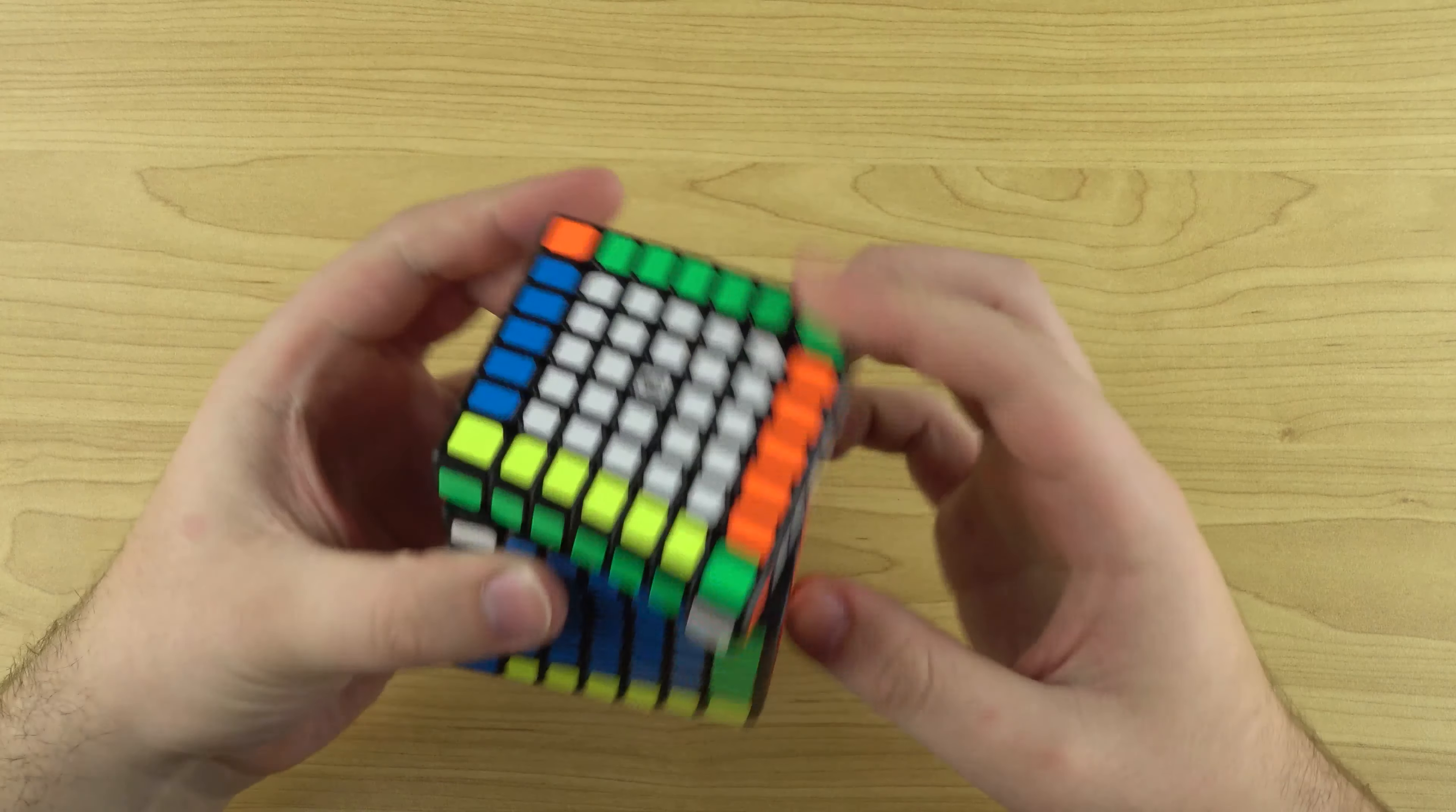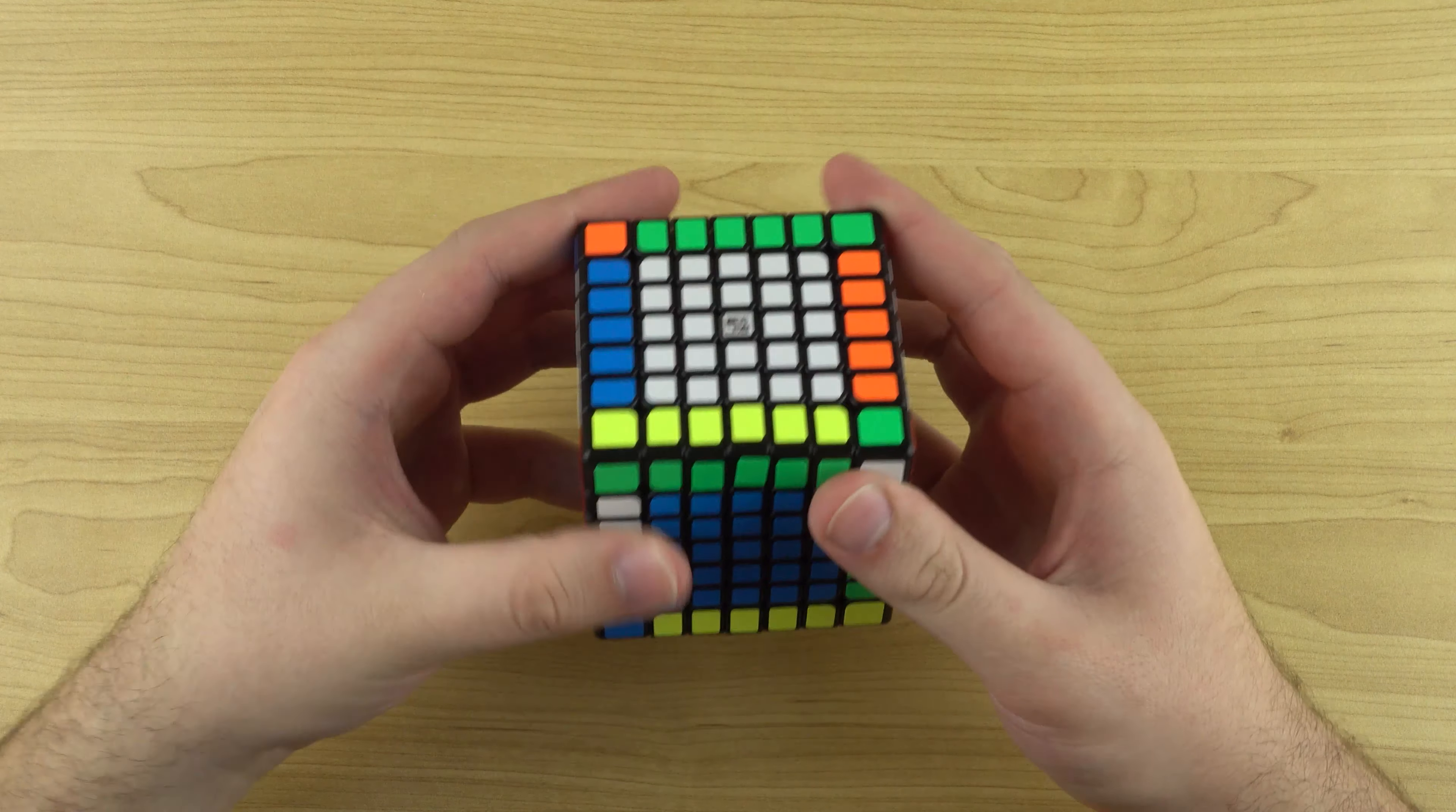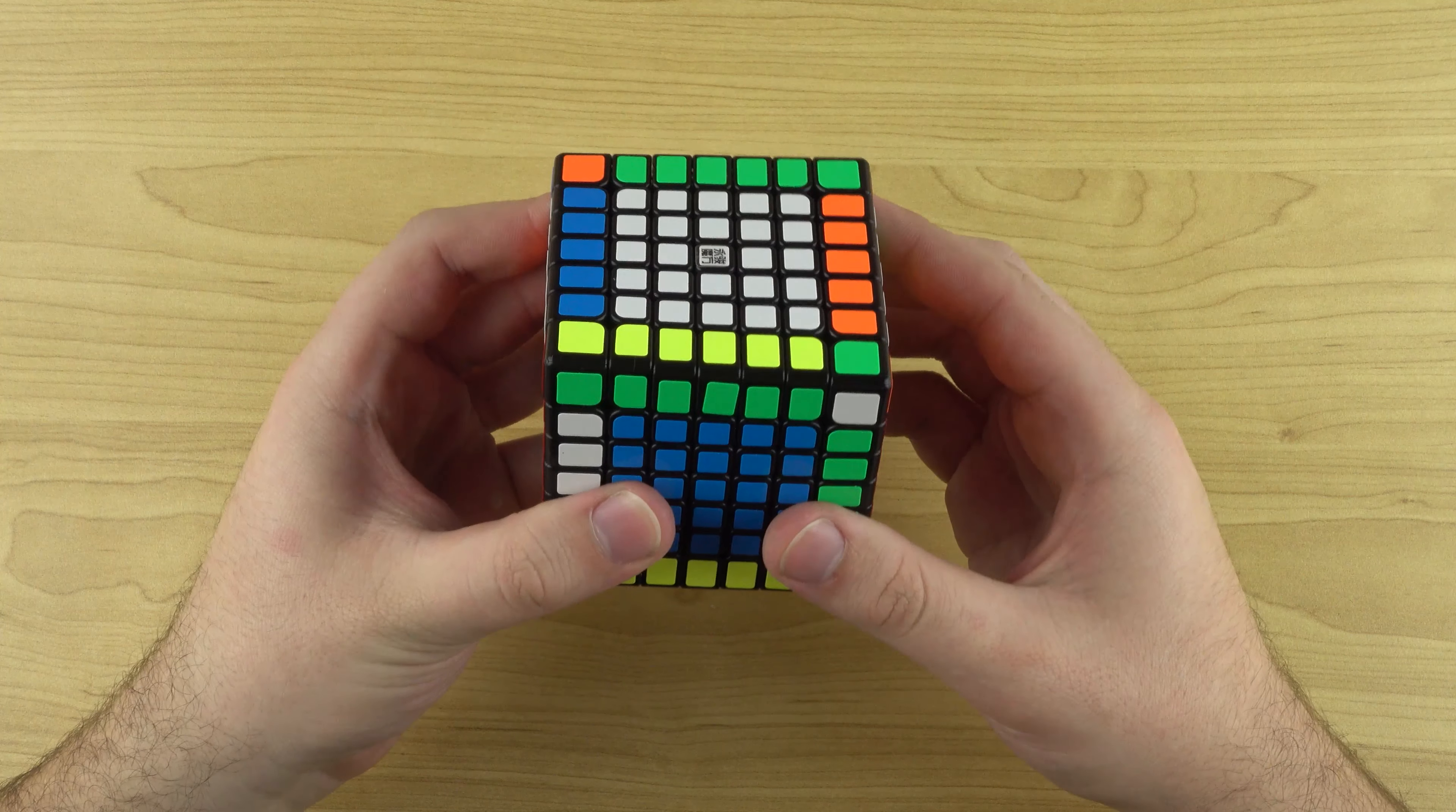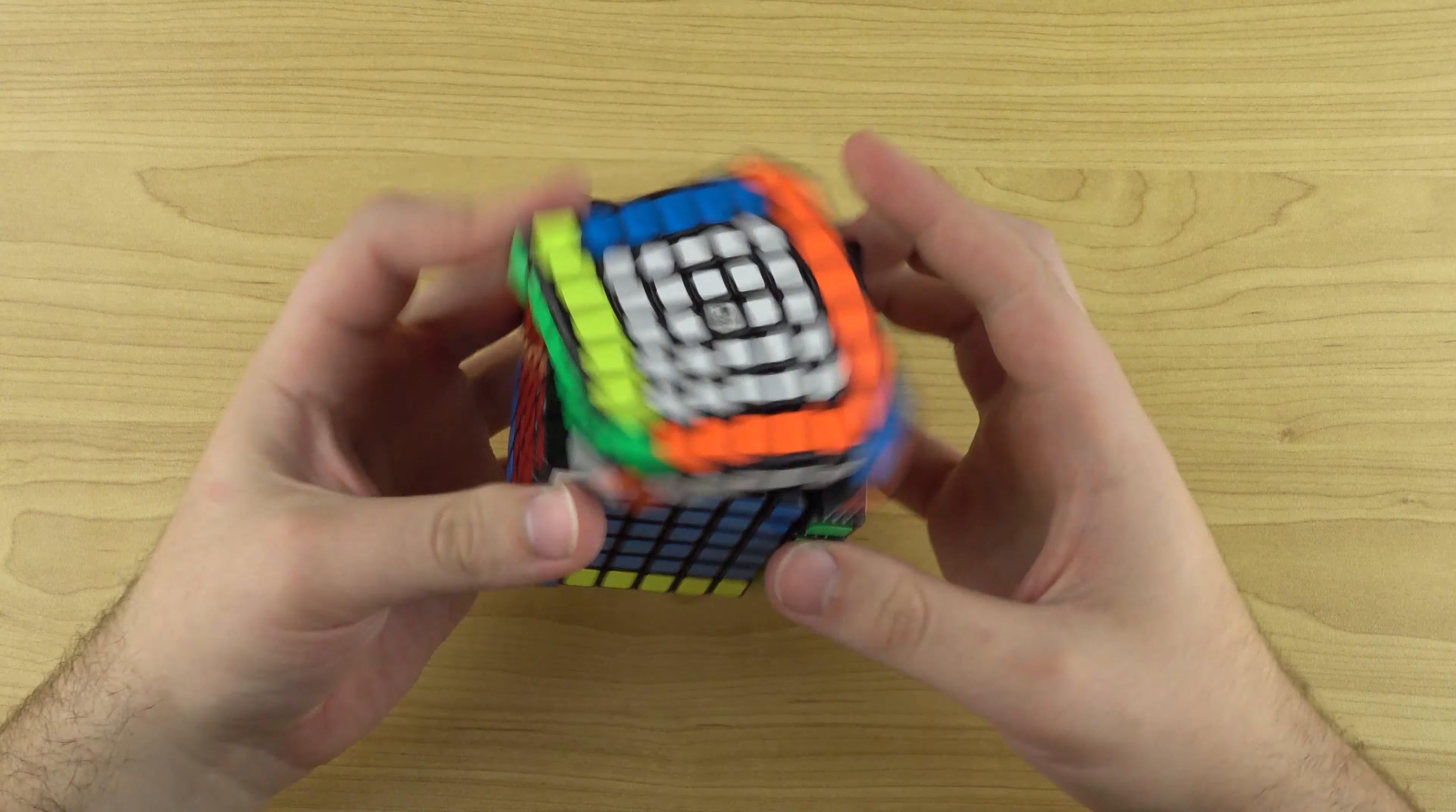So let's check out some corner cutting real quick. And yeah, that's fantastic. For a 7x7, it really doesn't get much better than that. So yeah, that's very good. Very happy with this. Now let's take a look at the Yuxin.